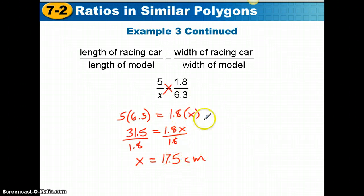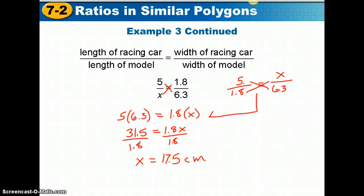Now I mentioned we could solve another proportion and get the same answer. If I compared the length of the racing car to the width of the racing car, that would be 5 over 1.8. That should still equal the length of the model to the width of the model. The length of the model is X, the width of the model is 6.3. This is a slightly different looking proportion, but if you solve this, you will still get 17.5 centimeters because we're still taking the same cross-product. I'm still multiplying 5 times 6.3 and still multiplying 1.8 times X. We still get the same cross-products.